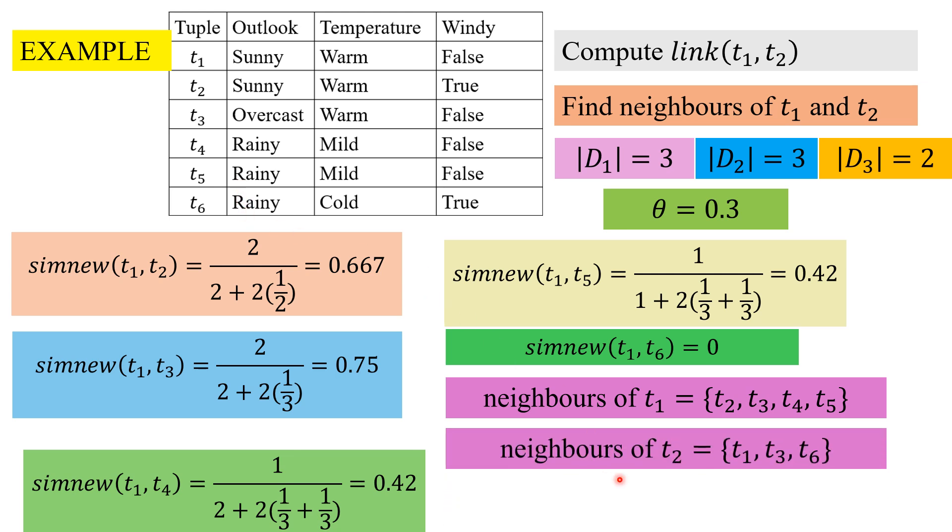In a similar fashion we go through the similarity of t2 with all the tuples and we find that the neighbors of t2 are t1, t3, t6. We see t3 is common. So the link value of t1, t2 is 1. We are not going through more detailed numericals in the present video. We will do it in future videos.